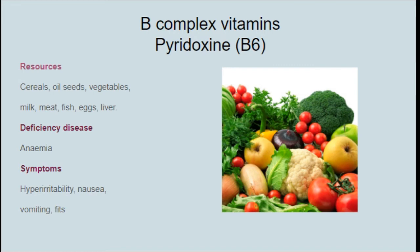One more B complex vitamin is B6, with scientific name pyridoxine. The resources for this vitamin are cereals, oilseeds, vegetables, milk, meat, fish, egg, and liver. The deficiency of this vitamin leads to anemia — the hemoglobin percentage will decrease. The symptoms are hyper irritability, nausea, vomiting, and fits. Vitamin B6 deficiency leads to anemic patients.